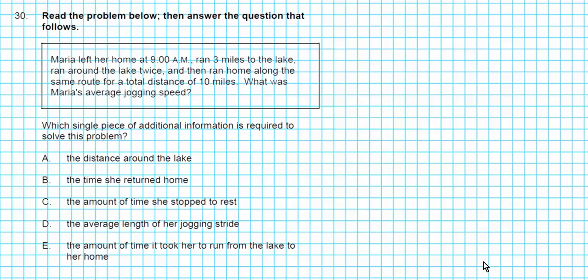Let's take a look at 30. Read the problem below and then answer the question that follows. Maria left her home at 9am, ran three miles to the lake, ran around the lake twice, then ran home along the same route for a total distance of 10 miles. What was Maria's average jogging speed? Question: which single piece of additional information is required to solve the problem?